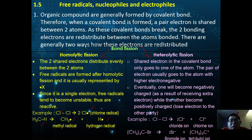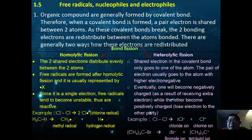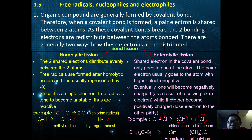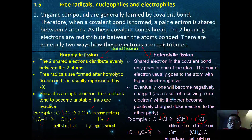In heterolytic fission, the shared electron pair goes to only one atom — usually the one with higher electronegativity. That atom becomes negatively charged while the other becomes positively charged. For example, chlorine can undergo heterolytic fission forming Cl⁻ and Cl⁺. In 2-bromo-2-methylpropane, the bromine — being more electronegative — forms a bromide ion, and a tertiary carbocation is formed.